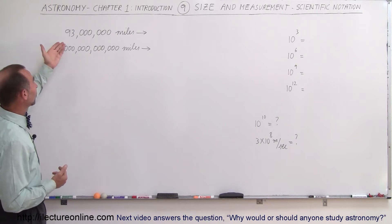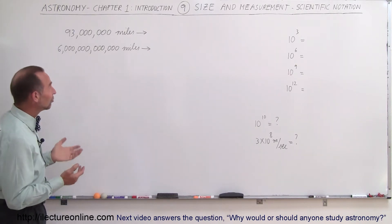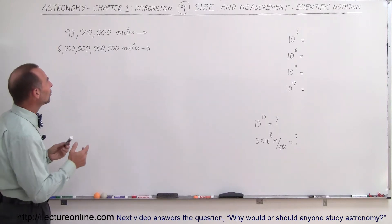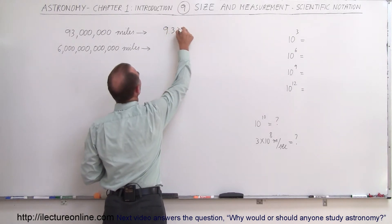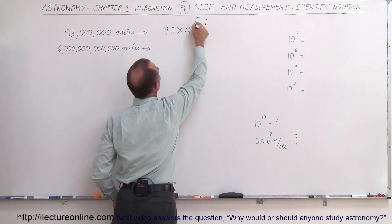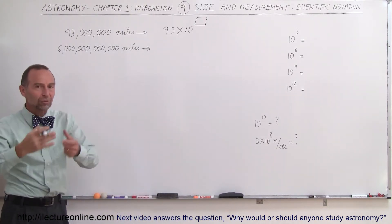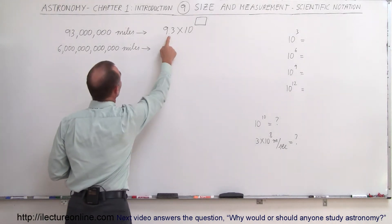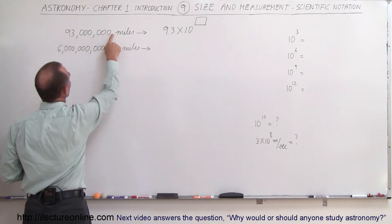So for example, let's say the distance between the Earth and the Sun is 93 million miles, and it would be easier if we could write that in a more compact way. And so what we do is we write it as 9.3 times 10 to the, and now we need some exponent up there. It's always in terms of a number times 10 to some exponent. And so what we do here is we count the number of decimal places that we go from the point between 9 and 3 to the end of the number.